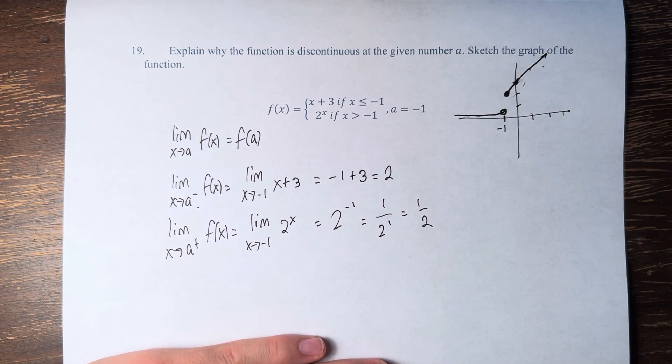We can see why it's discontinuous because we have a jump discontinuity. The two functions that are approaching from both sides do not equal each other.